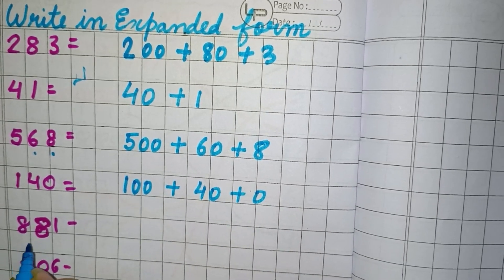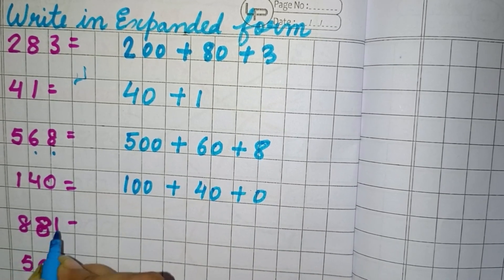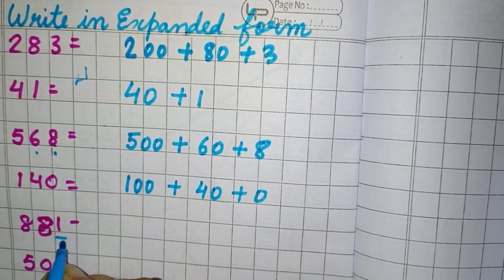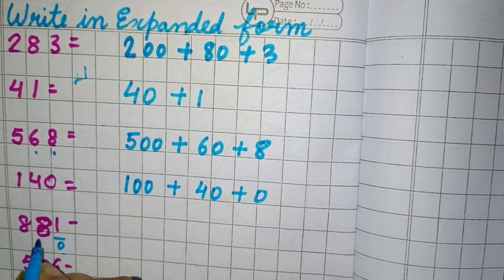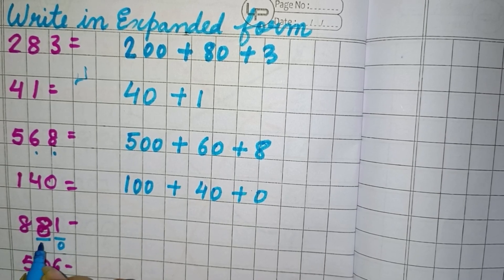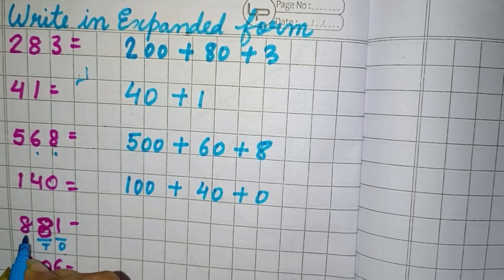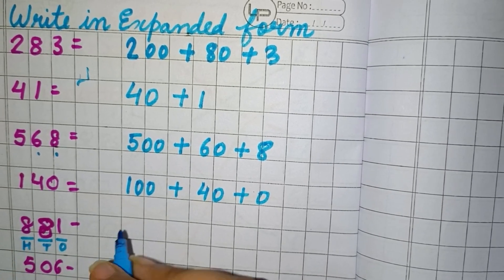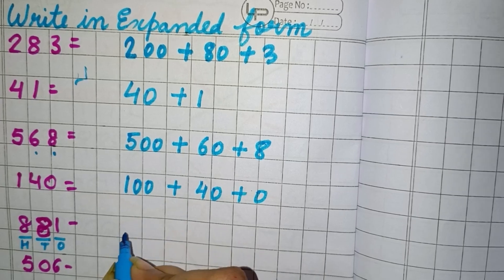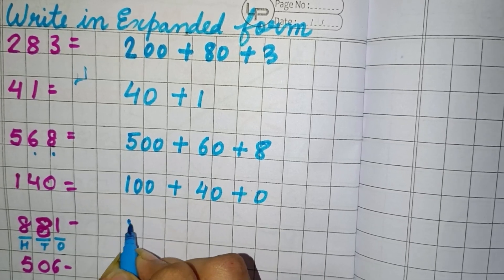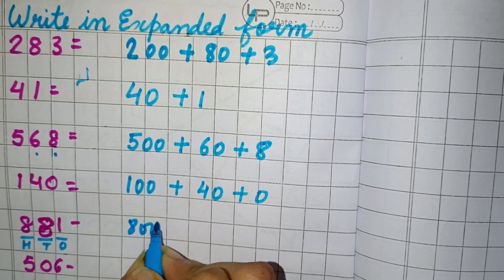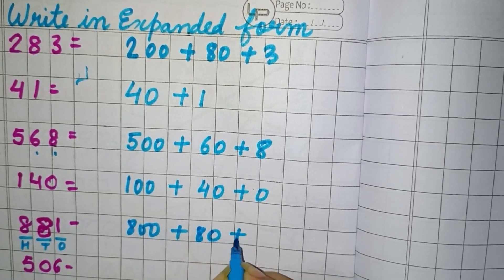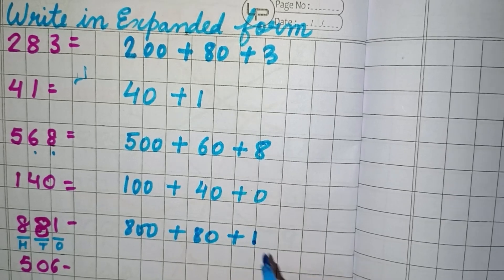Now next is 881. So we can see 1 is in 1's place, 8 is in 10's place, and the next 8 is in 100's place. So we will write 800 plus 80 plus 1.